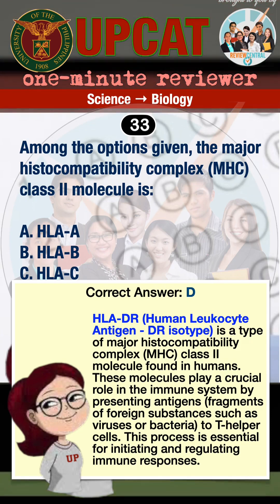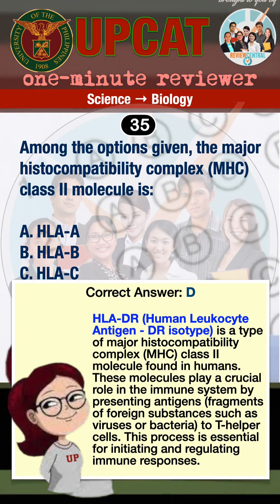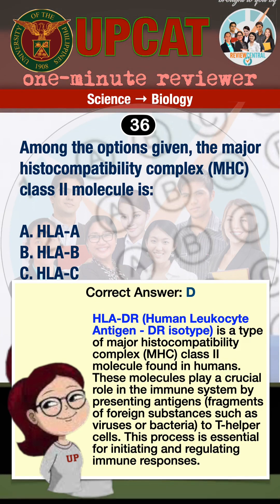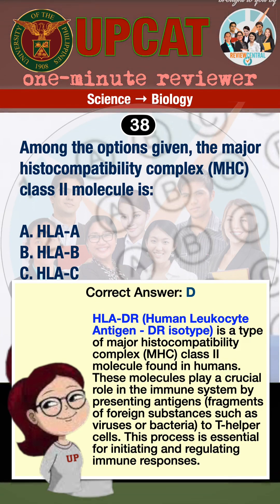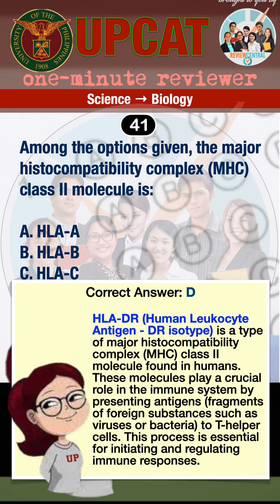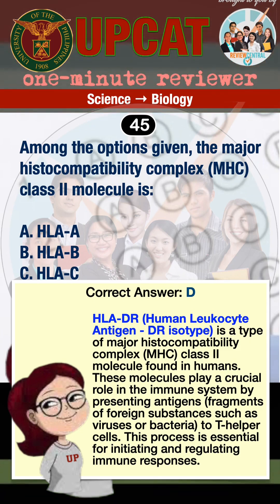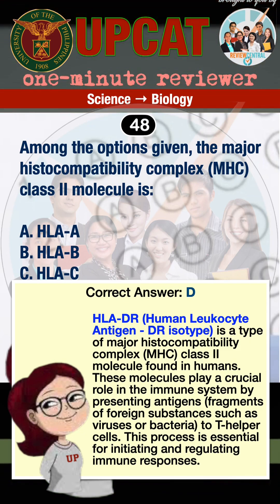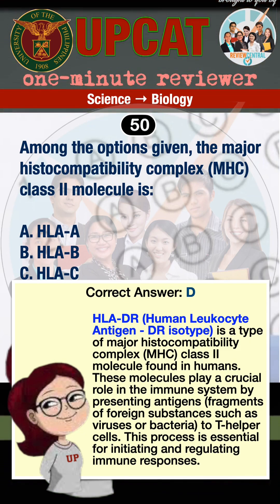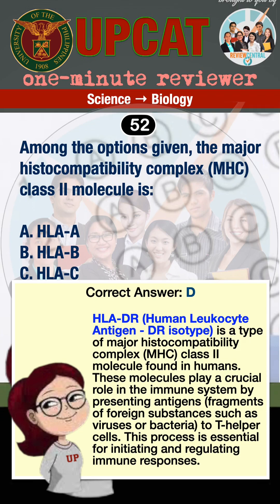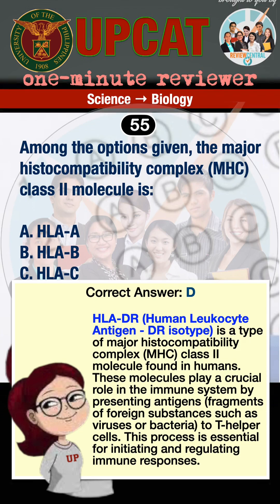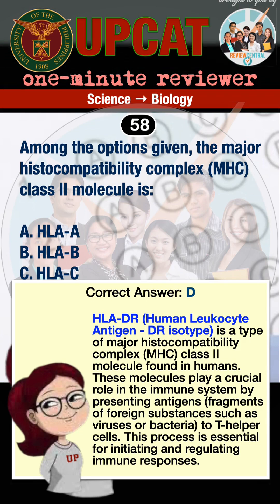HLA-DR, human leukocyte antigen DR-isotype, is a type of major histocompatibility complex, MHC, class II molecule found in humans. These molecules play a crucial role in the immune system by presenting antigens — fragments of foreign substances such as viruses or bacteria — to T-helper cells. This process is essential for initiating and regulating immune responses.